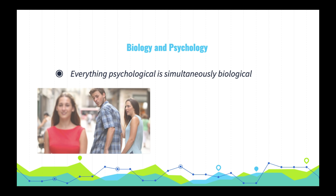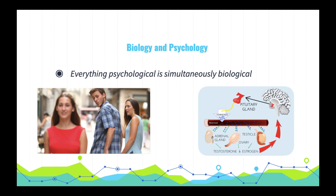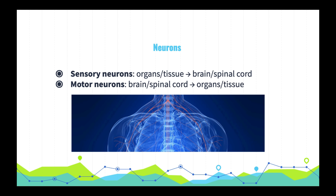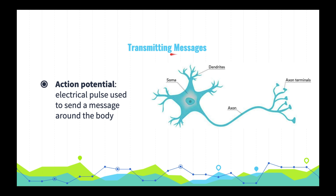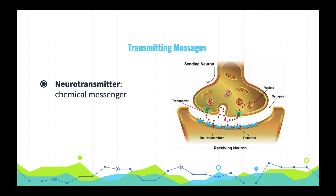For example, if we have an urge for sex — a subject studied in psychology — we can also examine how chemicals in our body biologically produce that urge. Biology and psychology are infinitely intertwined. Neurons are nerve cells, the foundational building blocks of our nervous system. Sensory neurons carry messages from our body's organs and tissue to the brain and spinal cord, while motor neurons do the opposite — they carry instructions from the brain and spinal cord to the body's tissues. When one neuron wants to pass a message to another, it fires an electrical pulse called an action potential that travels down the axon and triggers the release of neurotransmitters, tiny chemical messengers that cross the synapse — the tiny gap between the axon tip of the sending neuron and the dendrite of the receiving neuron.